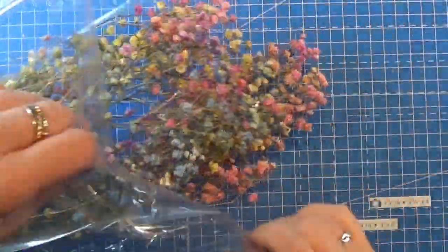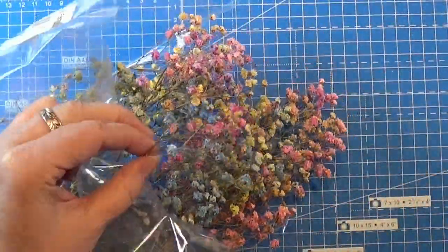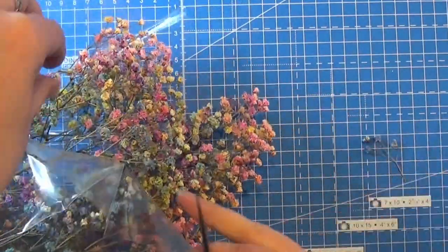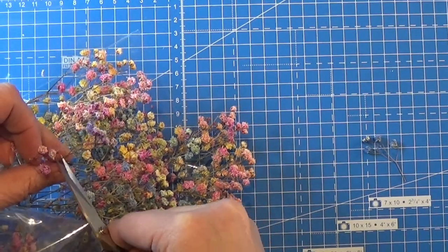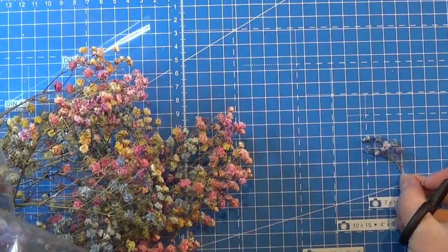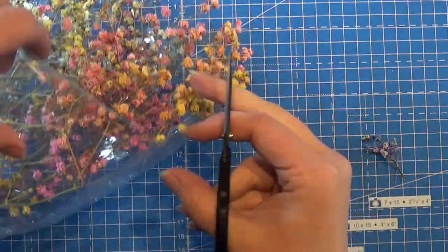And now it's time for the small bouquets so I'm taking my dried flowers here. I'm sorry I don't know the name of these, but I'm taking a few branches in a few of the colors so I'm just cutting off some small branches here.